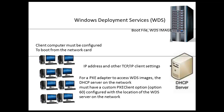So, the client computer starts to perform the network boot. It has to connect to the DHCP server on the network, from which it obtains the IP address and the other TCP/IP configurations along with option 60, the PXE client option, which contains the name of the server. Once that information has been delivered to the client machine, the client then connects to the WDS server.